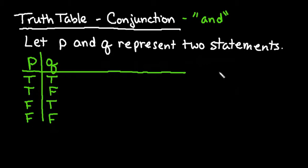If it helps you, you could also look at this in a tree diagram where I take my first statement P. This statement can either be true or false, and then my second statement can build off of here.